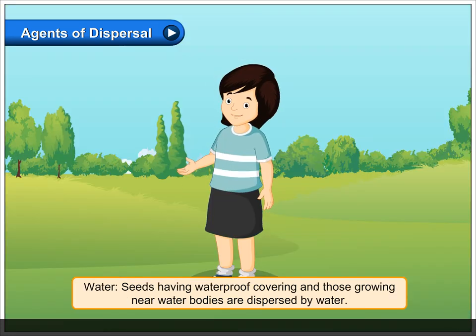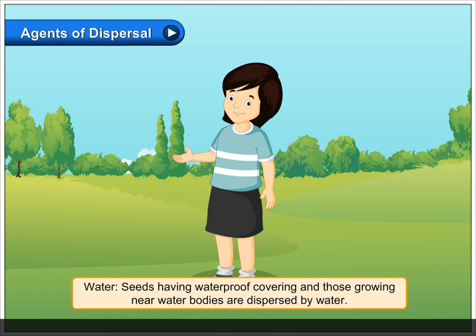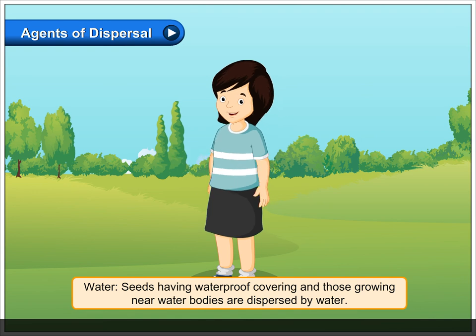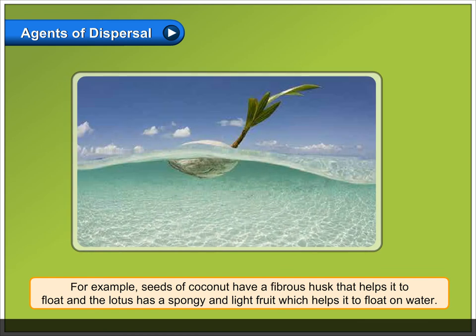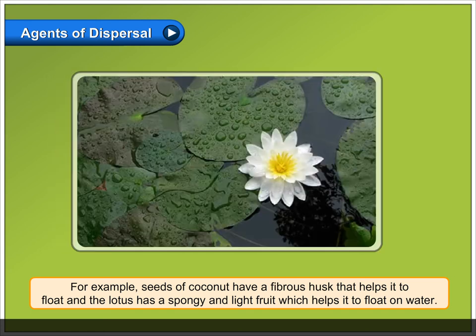Water: seeds having waterproof covering and those growing near water bodies are dispersed by water. For example, seeds of coconut have a fibrous husk that helps them to float, and the lotus has a spongy and light fruit which helps it to float on water.